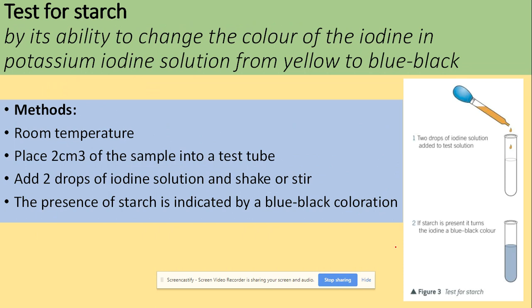To test for starch in food samples, we use iodine solution. Make sure you say 'iodine solution', not just 'iodine' — that wouldn't give you any marks. What we observe is the change of color from yellow to blue-black. How do we do it? We put a sample in a test tube, add two drops of iodine solution, shake or stir. The presence of starch is identified if the color change from yellow to blue-black is present.